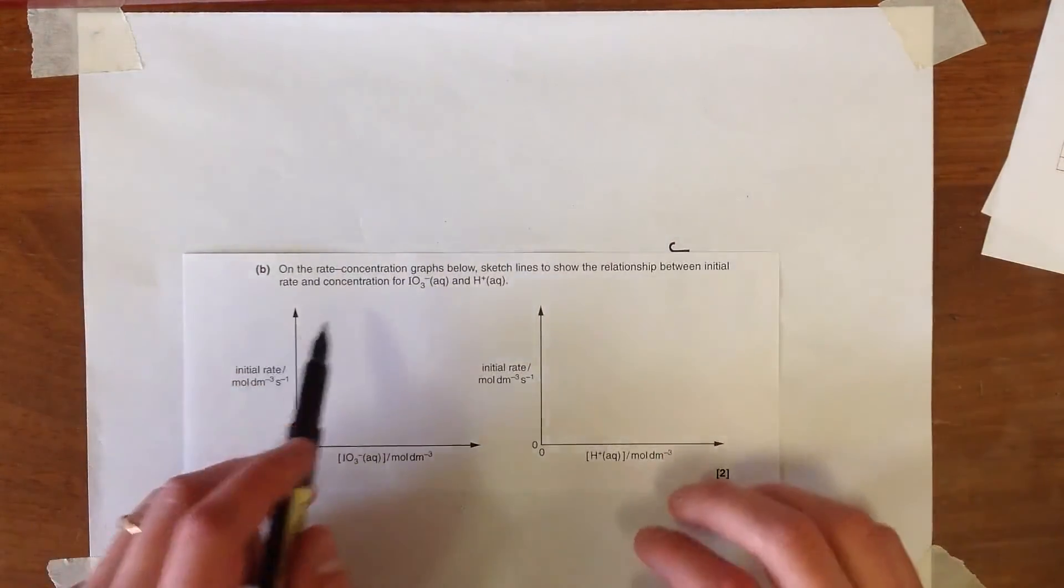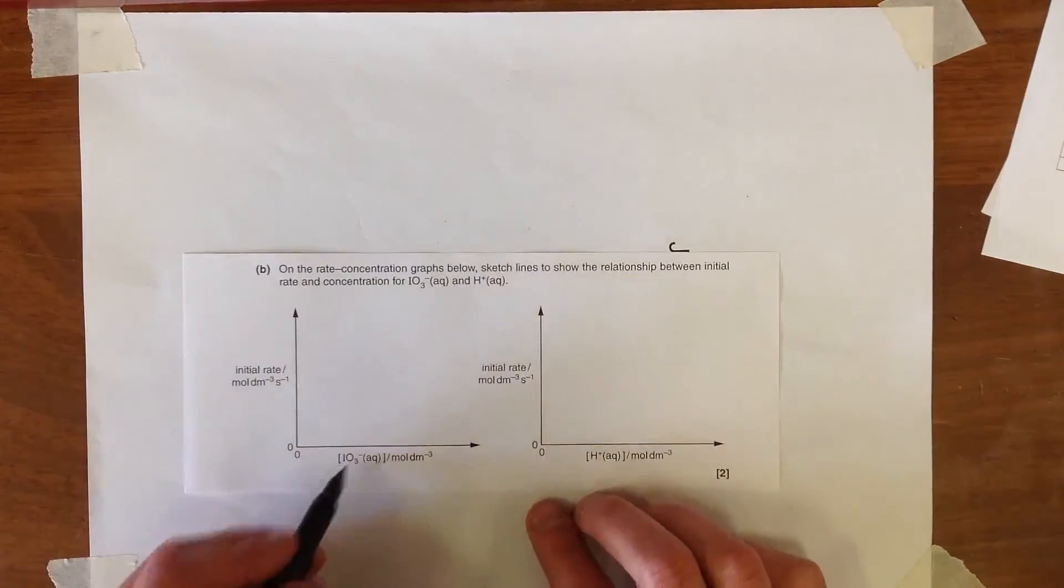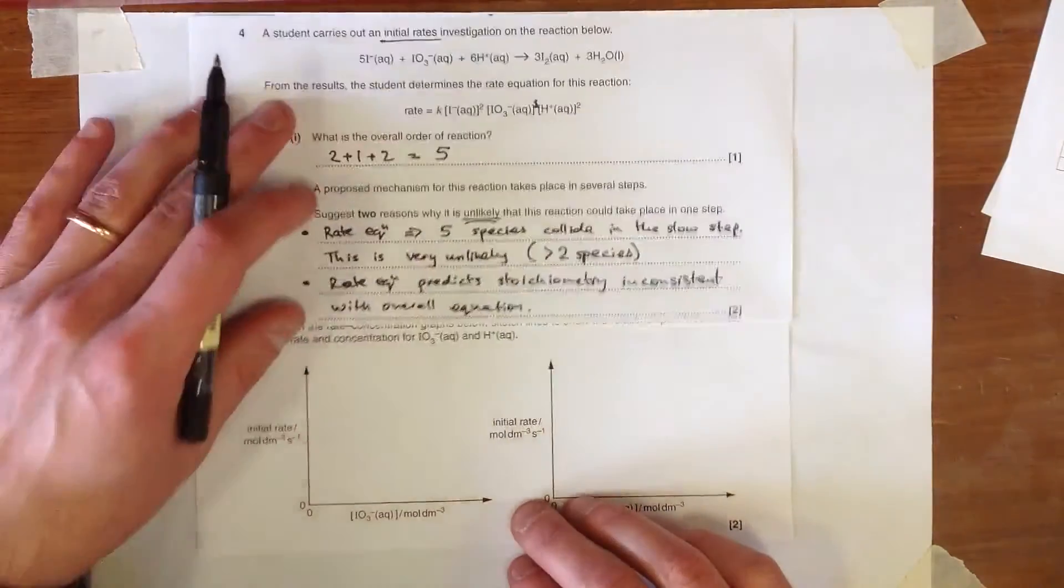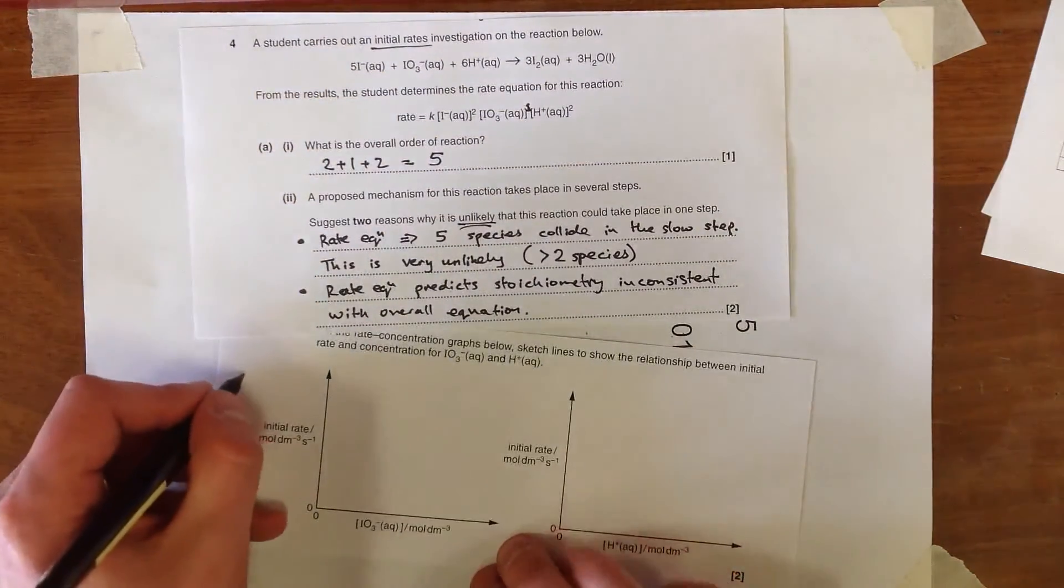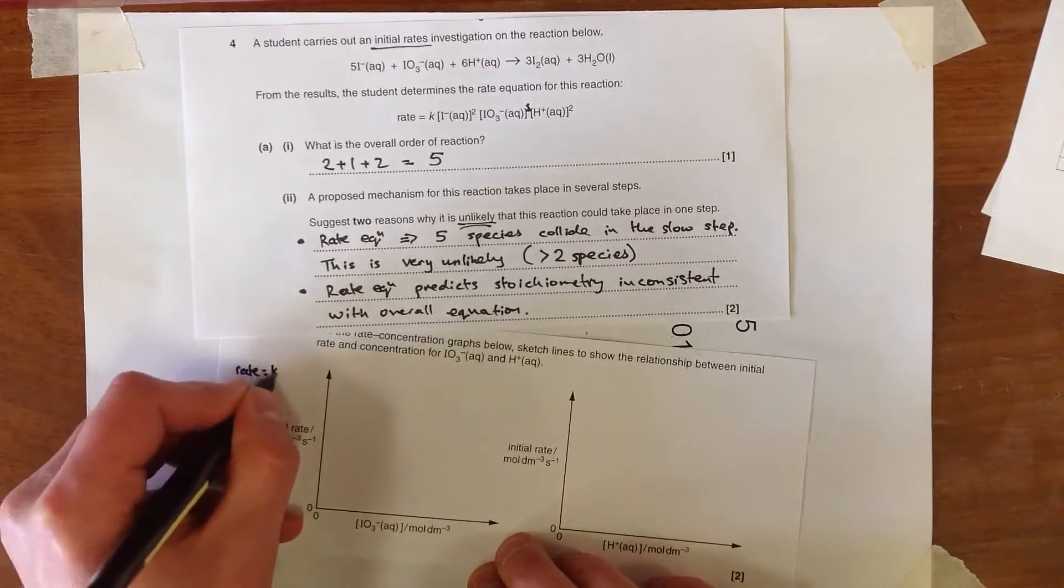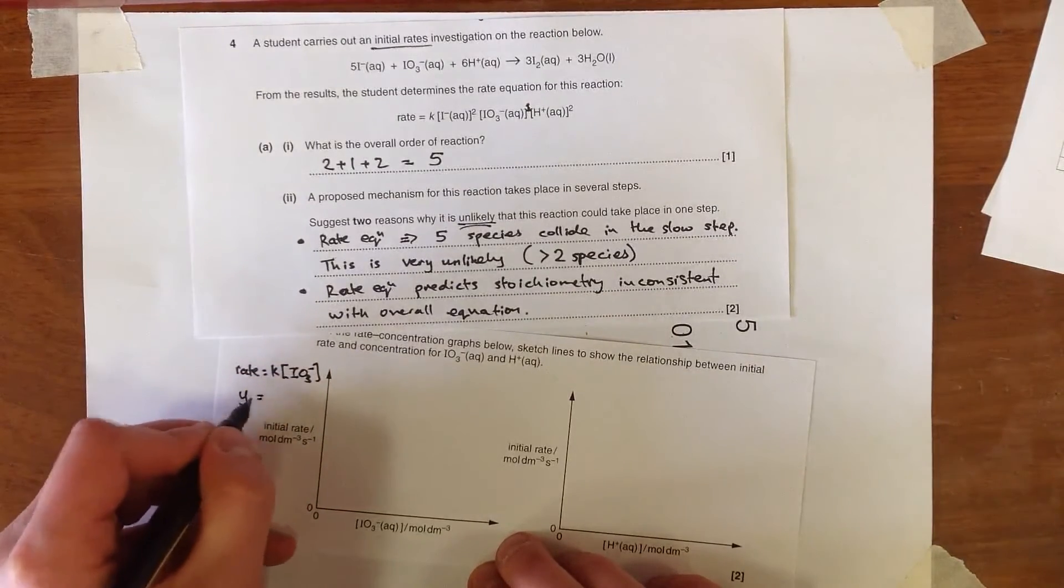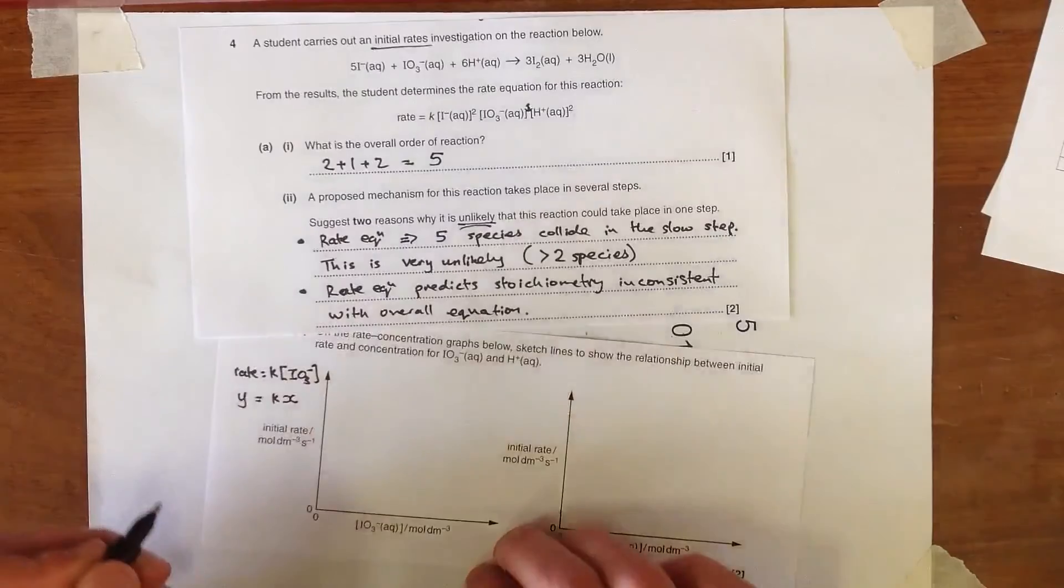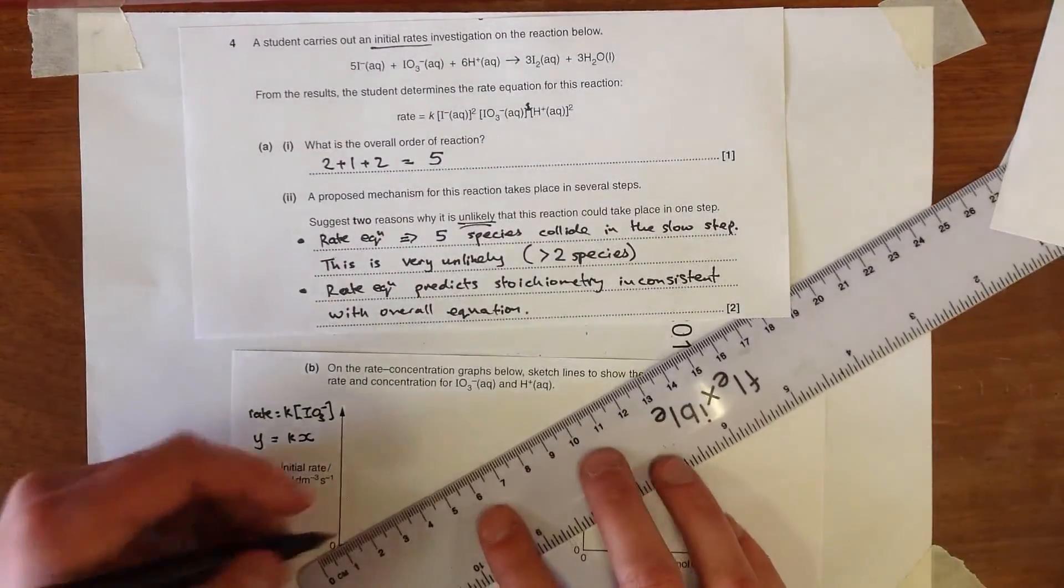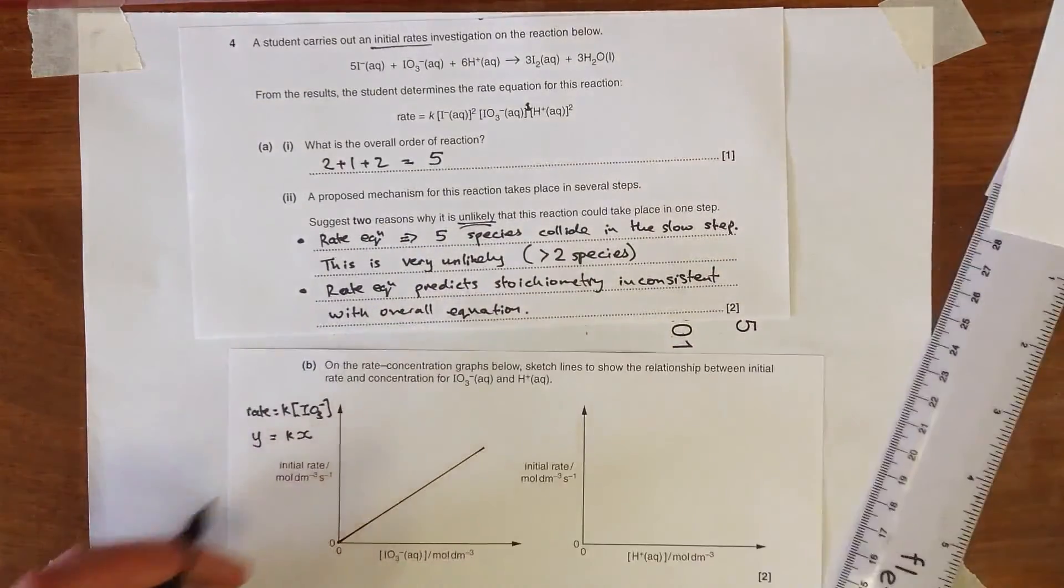The second part of the question asks us to draw rate concentration graphs for the initial rate against the iodate concentrations. It's useful to look back here. It was first order with respect to iodate. And what that means is that we're looking at rate equals K times the iodate concentration which is going to look something like a Y equals KX graph. So it's going to start at the origin because when X is zero, it's zero. And then it's going to be a directly proportional relationship. Just a straight line graph.